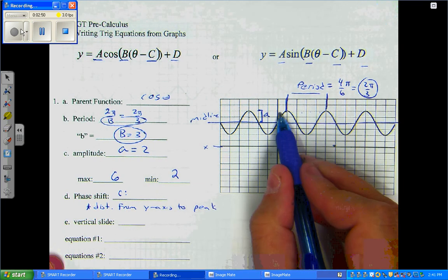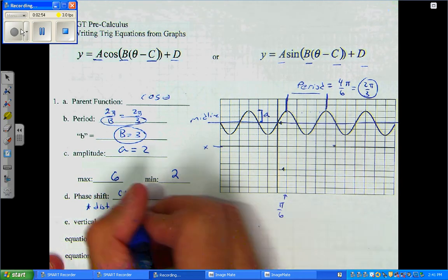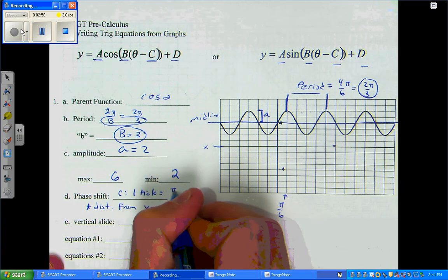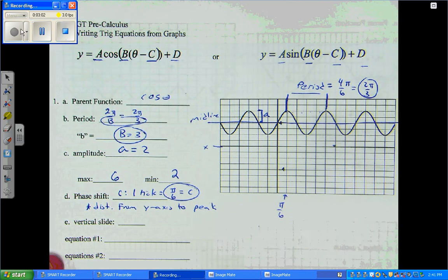Easy to be easy. So, here's my y-axis. If I count over, one tick. So, C is one tick mark. But, remember, each tick mark is pi over 6. So, C is going to be pi over 6.